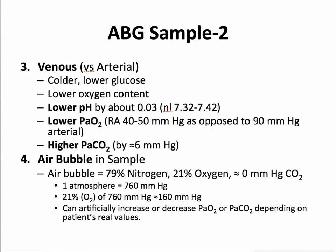A venous specimen — what does it look like versus an arterial specimen? Once the blood has gone from the arterial system through the capillaries, you've used up more glucose, so glucose will be lower on the venous side. It's going through cooler tissues, it's using up oxygen, so it will have lower oxygen content. And the pH, because CO2 is going to be higher, will look more acidotic — with a lower pH by about 0.03.